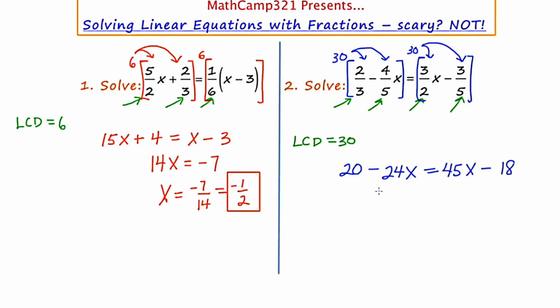Moving all the x terms to the right, I'll do that by adding 24 to both sides or 24x. And in the same step, I'll add 18 to both sides. So the 24x's on the left are going to cancel out, and the 18's on the right are going to cancel out. So we're going to be left with 38 is equal to 69x. If we divide both sides by 69, we get x equals 38 over 69.